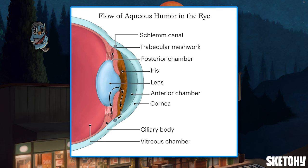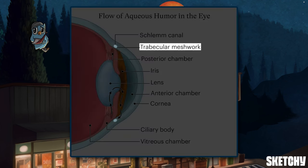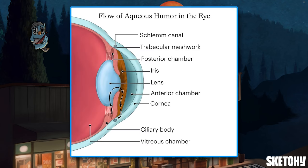The ciliary body secretes aqueous humor, which flows into the posterior chamber and travels between the iris and lens into the anterior chamber before draining through the trabecular meshwork. Glaucoma occurs when the eye's drainage system becomes obstructed, and this is a crucial point that we'll keep coming back to throughout the sketch.